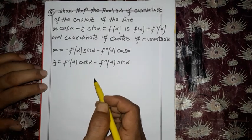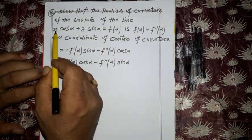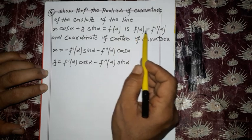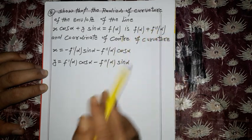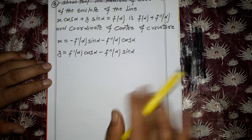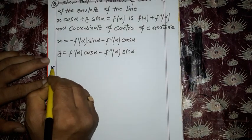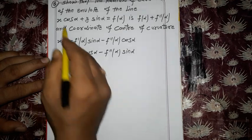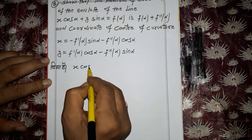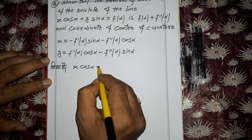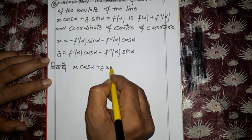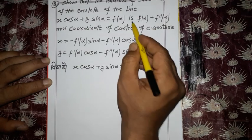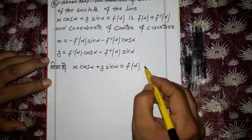Let's look at the question carefully. We are given an equation of a straight line, and we need to show that the radius of curvature has a certain form. What is given and what do we need to prove? We are given x cos α + y sin α = f(α).